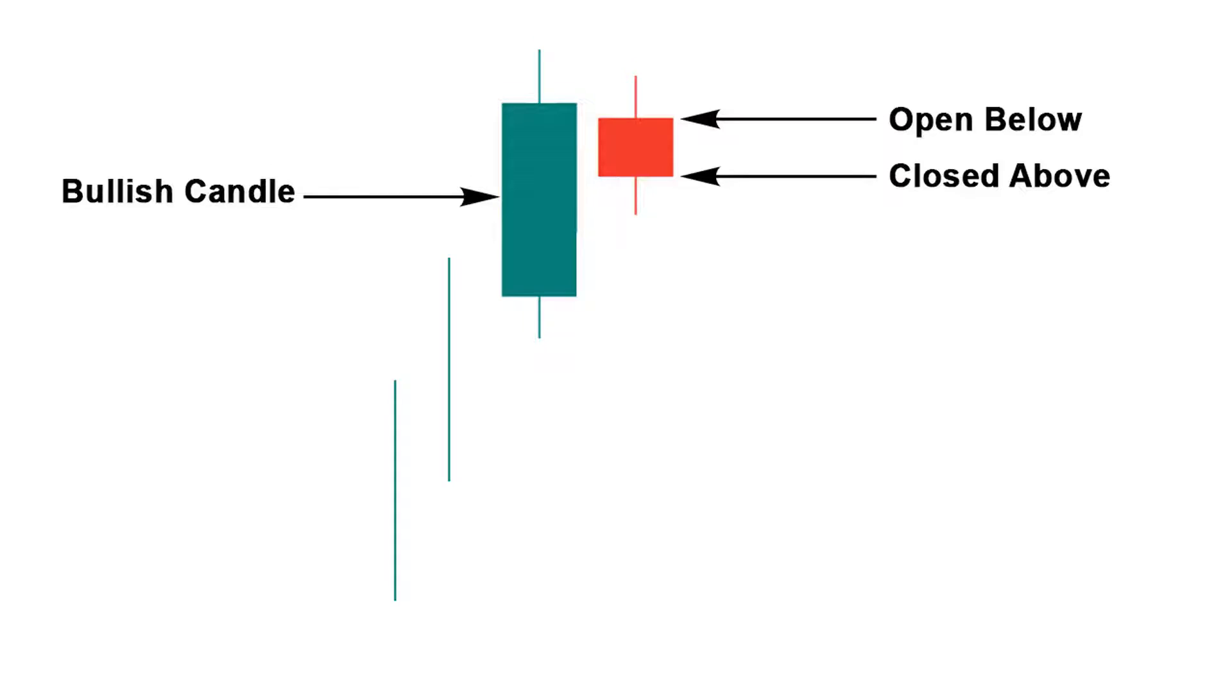When the bearish harami candle appears at the top of an uptrend, most traders sell securities and profit from the trading. They can only make money when the pattern becomes 100% perfect. Let's take a look at the conditions that form a 100% perfect bearish harami candlestick pattern.